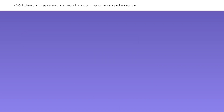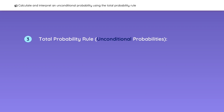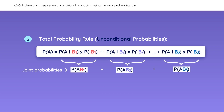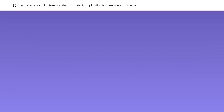You should also be familiar with one more rule called the total probability rule. It looks complicated at first, but it simply states that the probability of A is the sum of all the joint probabilities that include A. The easiest way to understand the total probability rule is to draw a tree diagram.